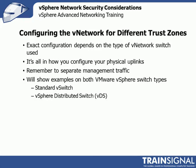When configuring the virtual network for different trust zones, the exact configuration depends on the type of network switch - standard vSwitches are a little different than the vSphere distributed switch, the VDS. It's really about how you configure your physical uplinks: are you sharing uplinks using VLANs, or separating traffic on different uplinks? Also remember to separate your management traffic, which is a pretty big deal. I'll show you examples on both the standard vSwitch and the vSphere distributed switch.